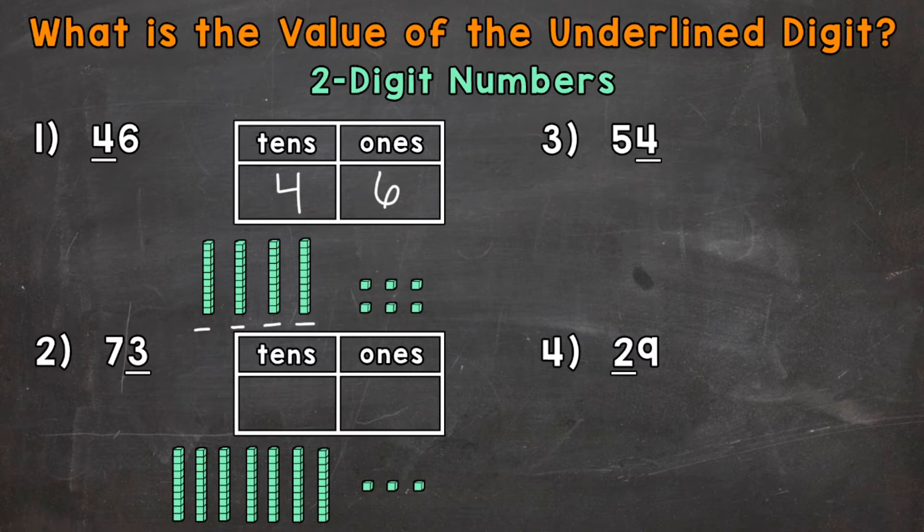So the value or worth of that 4 is 40. Again, because the 4 is in the tens place, therefore it represents 4 groups of 10, and has a value of 40.